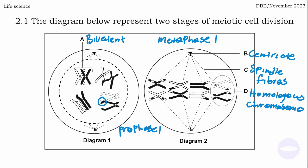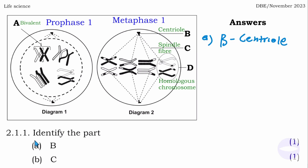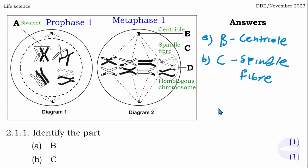Now let's go to the questions. Question 2.1.1 - identify the parts. Number A and B: these parts are centrioles. Number B asks to identify part C: C is a spindle fiber.